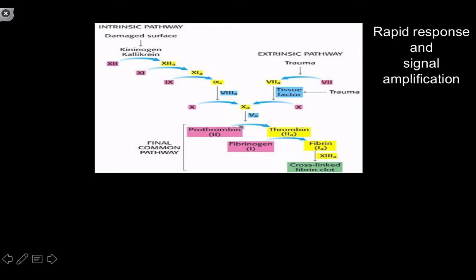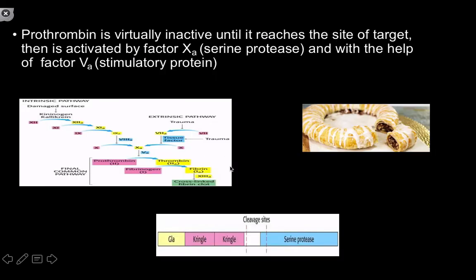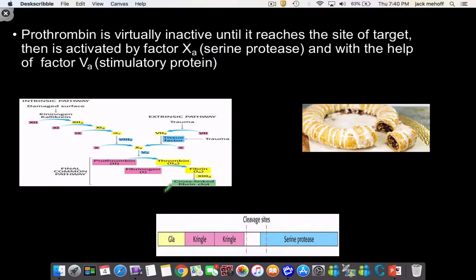This convergence is not just useful in that both pathways meet here, but a lot of drugs work specifically by modifying the final common pathway. Since the first proenzyme we work with is prothrombin, I'm going to take some time to illustrate a bit about it.